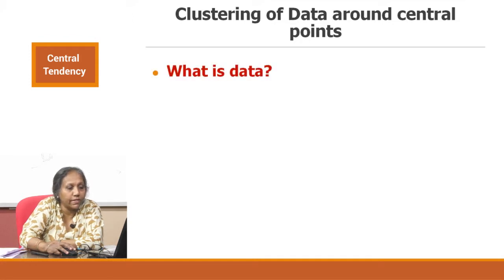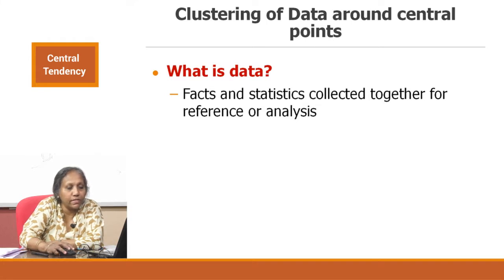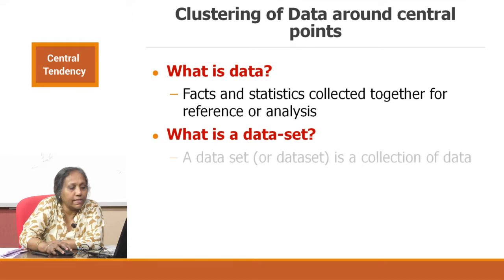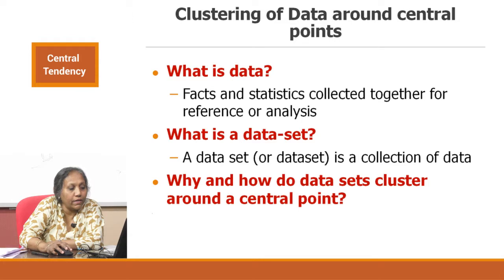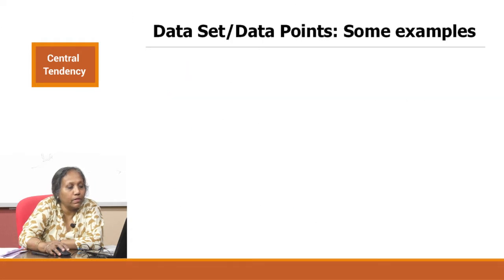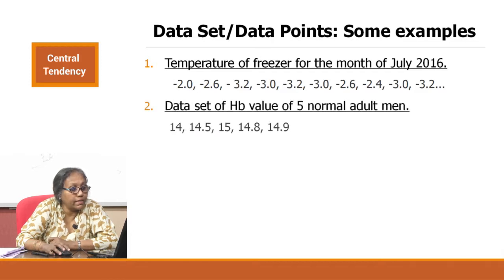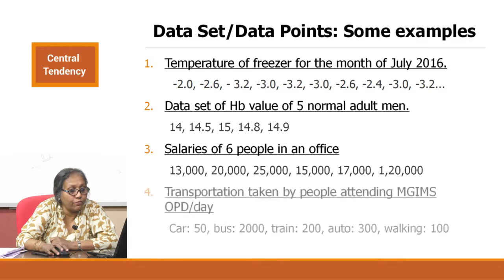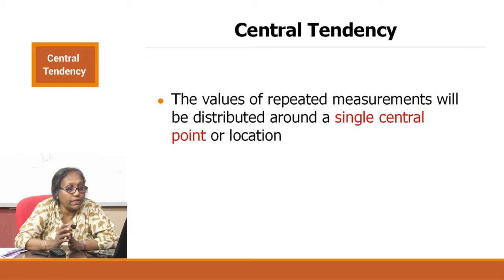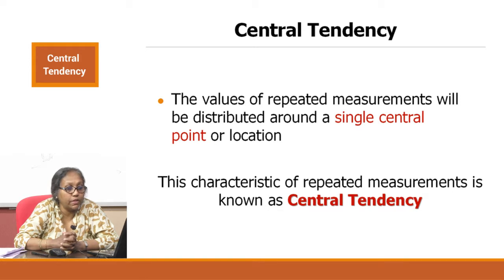We have to understand what data is: facts and statistics collected together for reference or analysis. A dataset is a collection of data. We will look at four example datasets: the temperature of a freezer for the month of July, hemoglobin values of five normal adult men, salaries of six people in an office, and transportation modes taken by people attending the OPD on a certain day. Values of repeated measurements will be distributed along a central point — this is the central tendency.